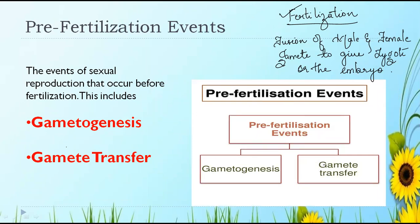Pre-fertilization events are the events of sexual reproduction that occur before fertilization. Whatever events occur in sexual reproduction before the fertilization process are called pre-fertilization events. The pre-fertilization events are of two types: one is gametogenesis and one is gamet transfer.